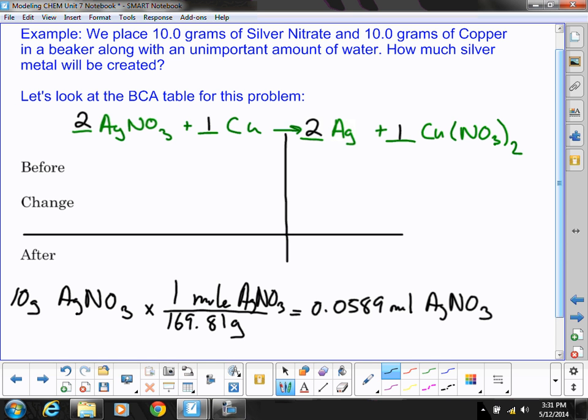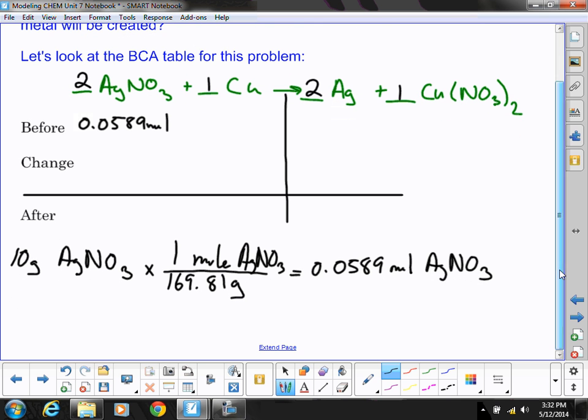So I'm going to put that in my BCA table for my before. And then I'm going to do the same thing with copper. 10.0 grams of copper times one mole of copper is 63.55 grams. And that gives me 0.157 moles of copper.